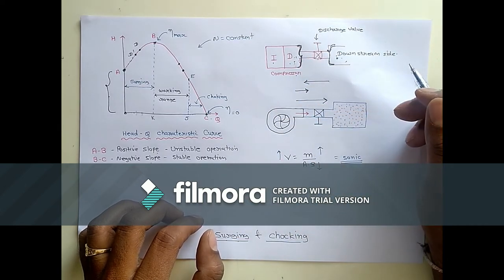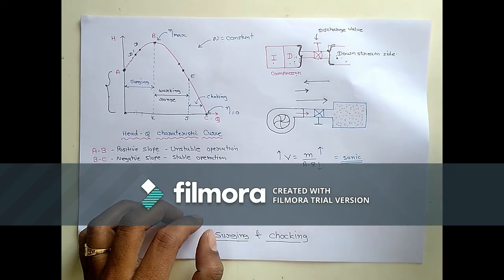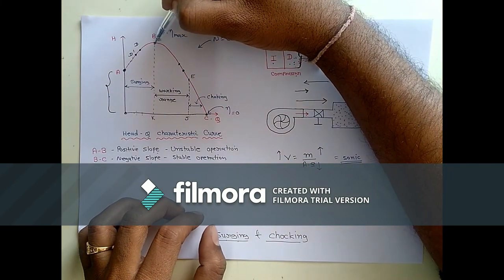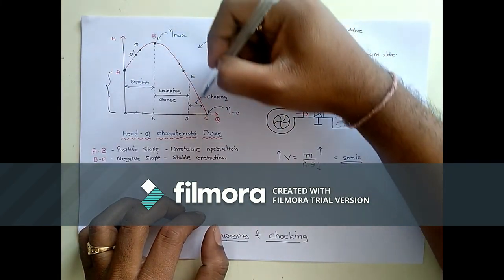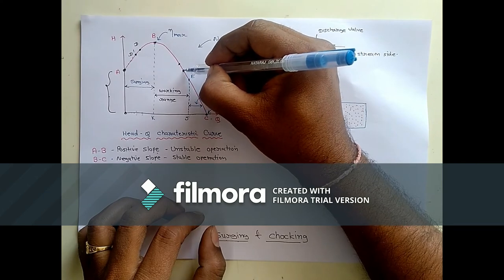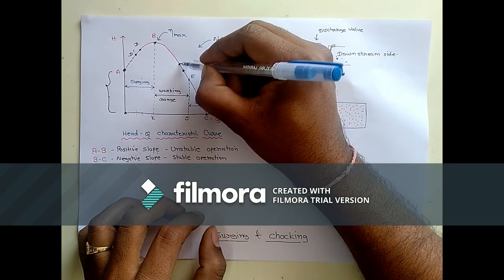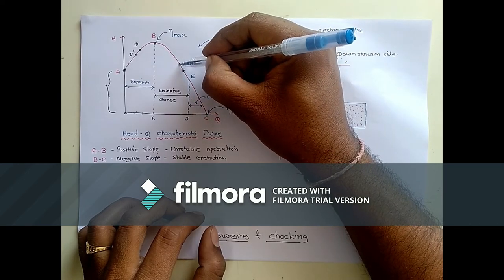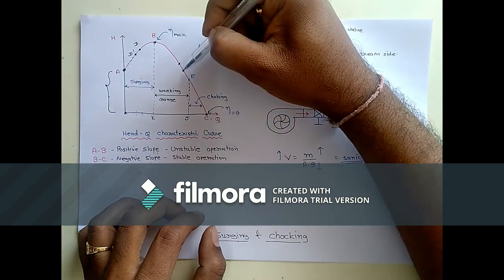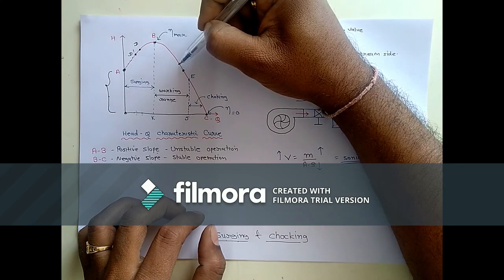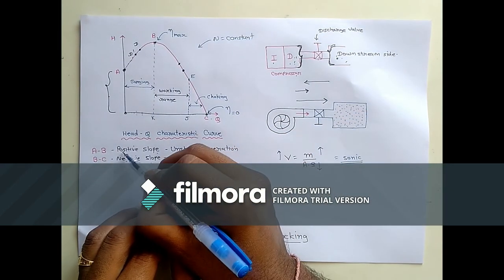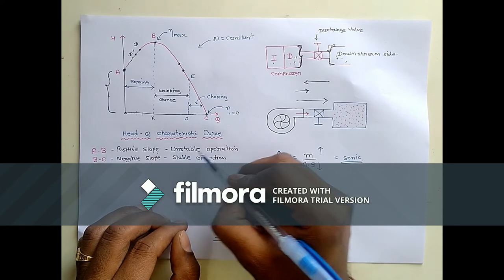The surging problem causes vibration of the compressor parts and is generally avoided. A surge control valve is also used for this purpose. Now, why does surging not occur during the B to C region? As the discharge decreases in this region, the pressure does not decrease — the head increases. So there will never be a reverse flow in this region. Even after decreasing discharge, the head increases from B to C. Surge only occurs on the positive slope side, which is why it is known as the unstable operation region.